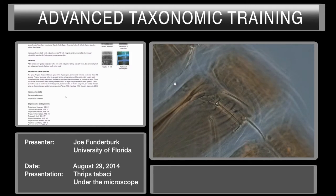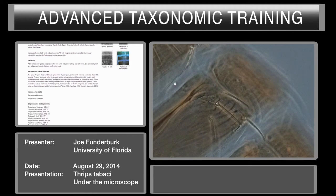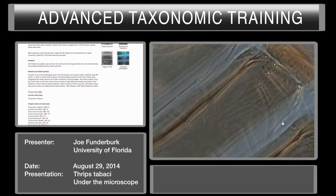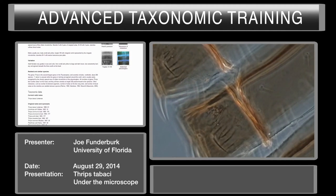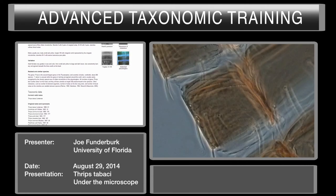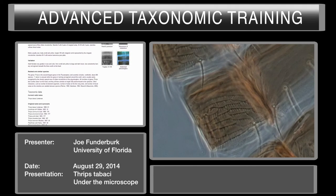It also gives information about related and similar species. You'll notice it says that Thrips tabaci is unusual within the genus in lacking red pigment around the ocelli, and is usually easily recognized by the closely spaced rows of ciliate microtrichia on the pleurotergites. So let's look at the pleurotergites and focus up and down — there you go, regular rows of microtrichia.